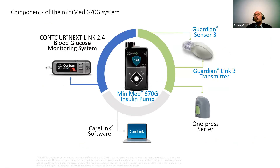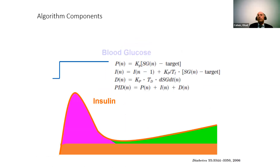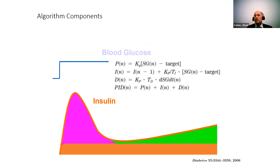We want to also optimize the basal rate to accommodate different demands and reduce hyperglycemia. So the first automated insulin delivery system — the 670G — automated the basal rate. What does automating the basal rate mean? It means there is no fixed basal rate assumption. Every five minutes, the amount of basal insulin is calculated and delivered in a small dose. It's a different concept, and it was very difficult to persuade regulators that this could work.